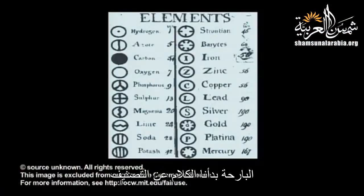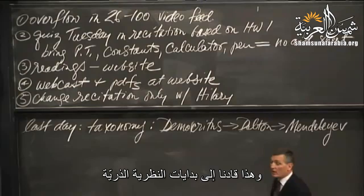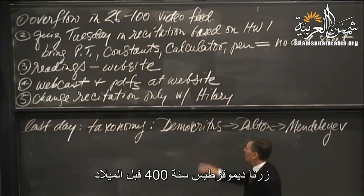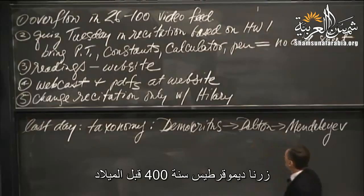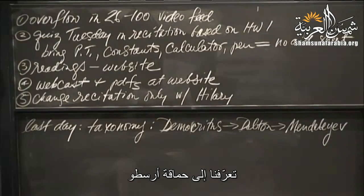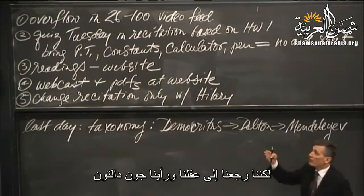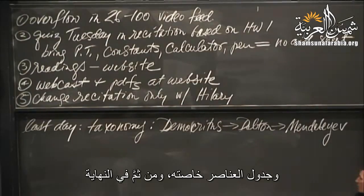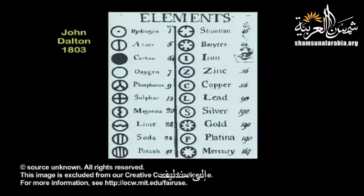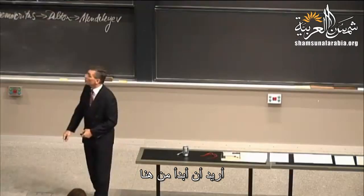Last day we started talking about taxonomy, and that led us to the beginnings of atomic theory. We visited with Democritus, 400 BC. We had that detour with the idiocy of Aristotle, and then eventually got back to our senses. We saw John Dalton with his Table of the Elements, and then ultimately on to Mendeleev. I wanted to pick up the thread there.